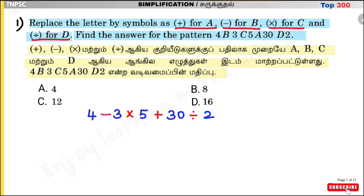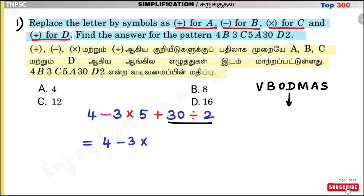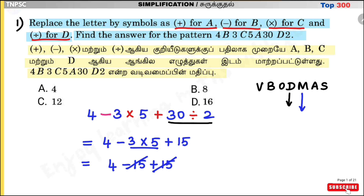Now we have 4 mathematical operations. We apply the BODMAS rule. First, use division: 30 divided by 2 is 15. So we get 4 minus 3 into 5 plus 15. Next multiplication: 3 into 5 is 15. Then 4 minus 15 plus 15 — the 15s cancel. It is equal to 4. Answer is Option A: 4.